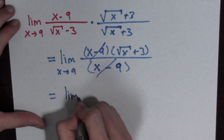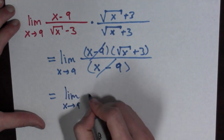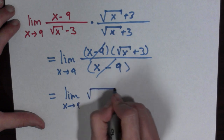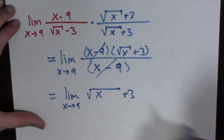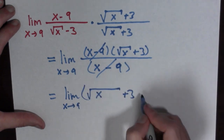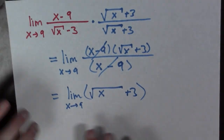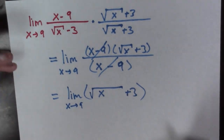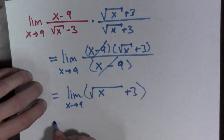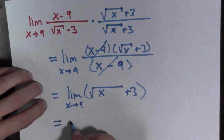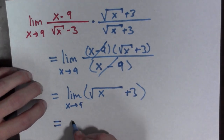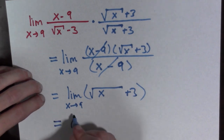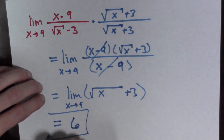We get the limit as x goes to 9 of the square root of x plus 3. Now we plug in 9: the square root of 9 is 3, so this equals 3 plus 3, which is 6. There's our final answer.